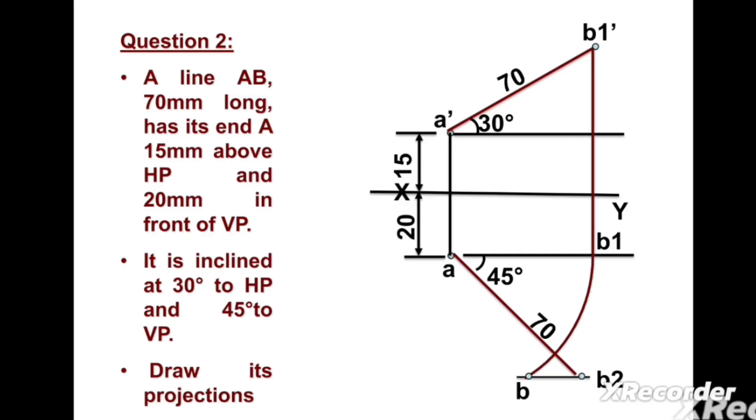Now we can join points a and b. This is the top view, or we can say the plan of the line. Now we can draw a vertical line passing from point b.